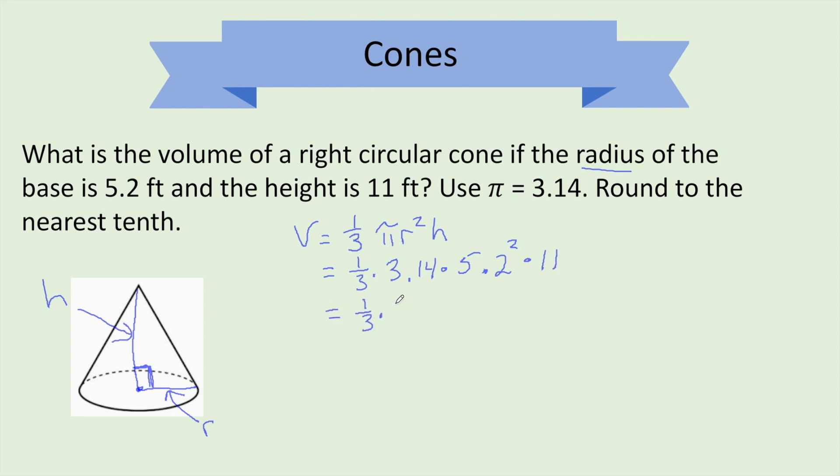It says the radius of the base is 5.2 times the height, which is 11. One-third, 3.14. First thing you want to do is square this guy. 27.04 times 11. Next thing is multiply these. Keep the numbers right in your calculator. Because when you get this, all you're going to do now is hit divide by 3.